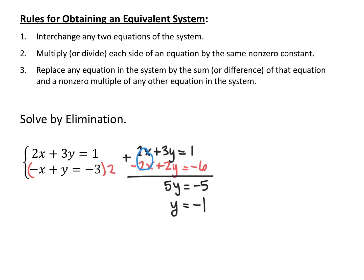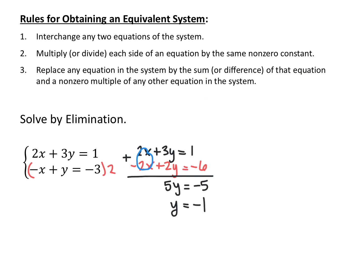For this first example, I noticed that x already has opposite signs. So I multiply the whole bottom equation by 2 using the second rule, and get negative 2x plus 2y equals negative 6. Then I add the original first equation to this new second equation using rule three, the x's are eliminated, and I get 5y equals negative 5, so y equals negative 1.